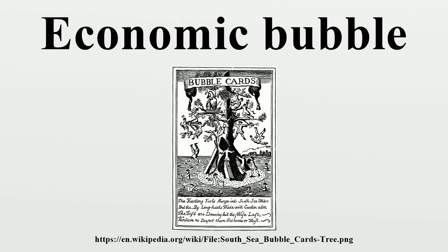Within Austrian economics, economic bubbles are generally considered to have a negative impact on the economy because they tend to cause misallocation of resources into non-optimal uses. This forms the basis of Austrian business cycle theory. Political economist Robert E. Wright argues that bubbles can be identified before the fact with high confidence. In addition, the crash which usually follows an economic bubble can destroy a large amount of wealth and cause continuing economic malaise. This view is particularly associated with the debt deflation theory of Irving Fisher, and elaborated within post-Keynesian economics.